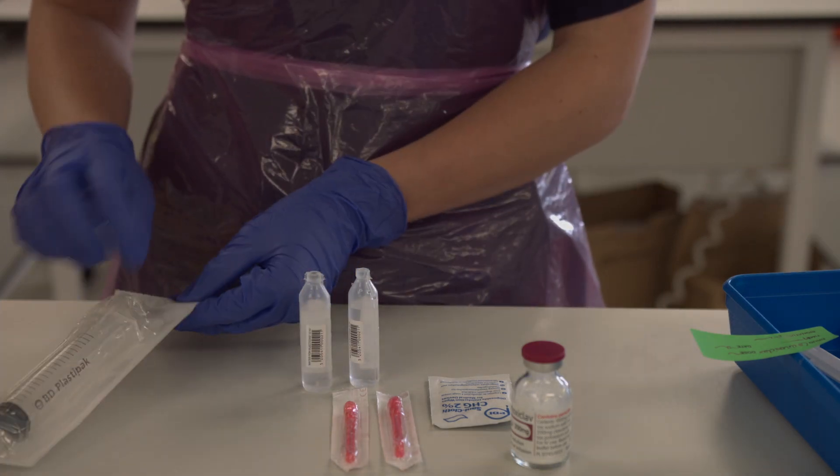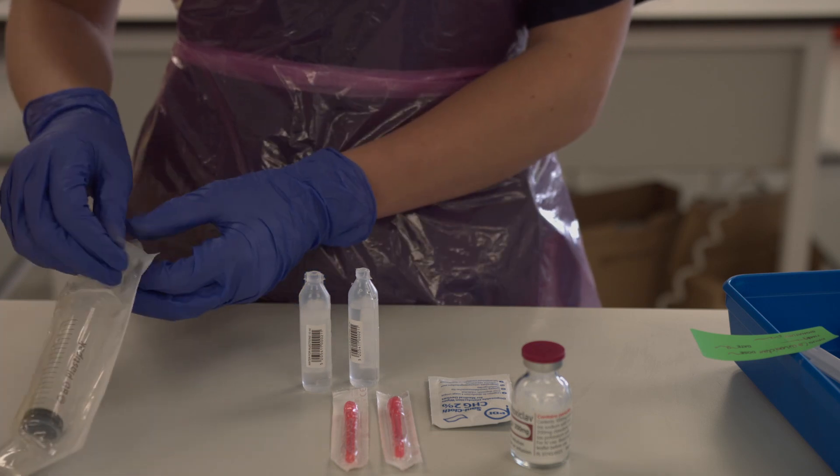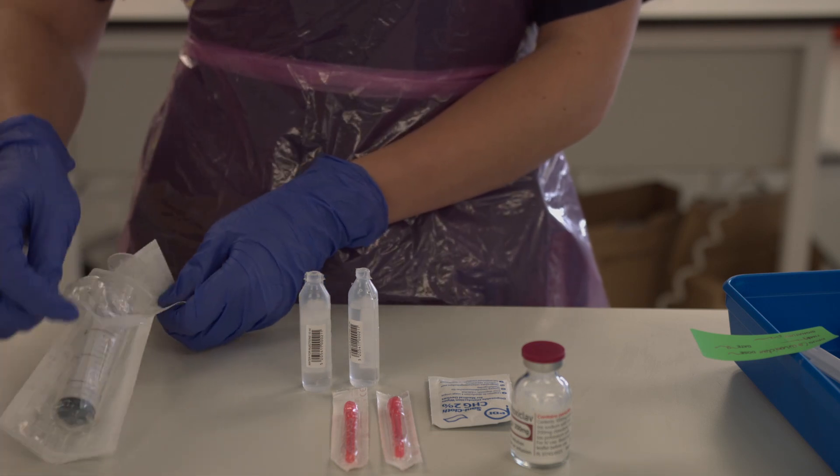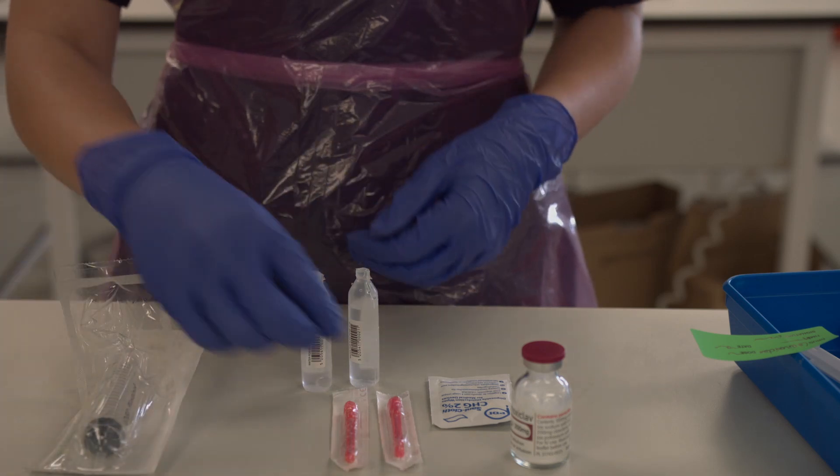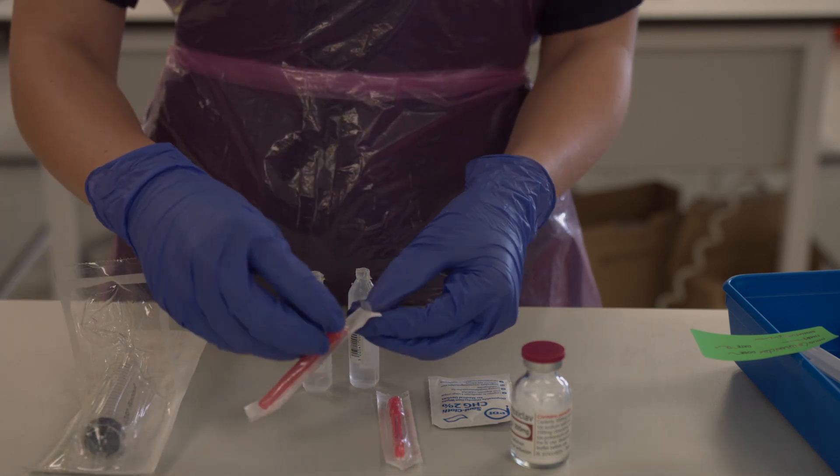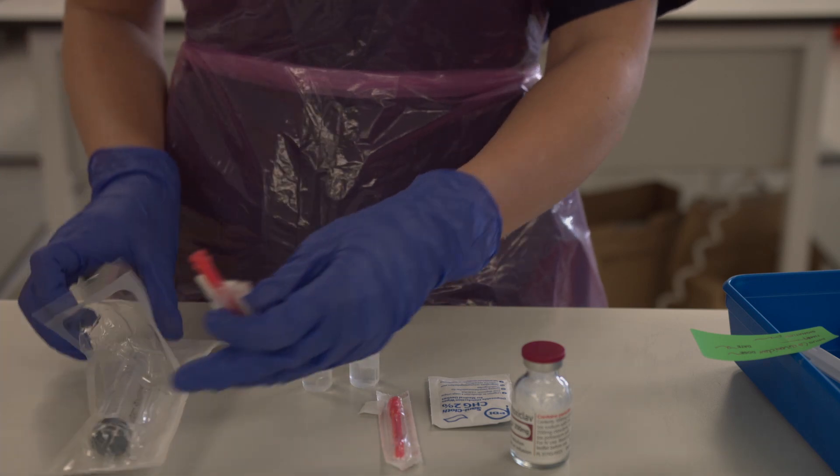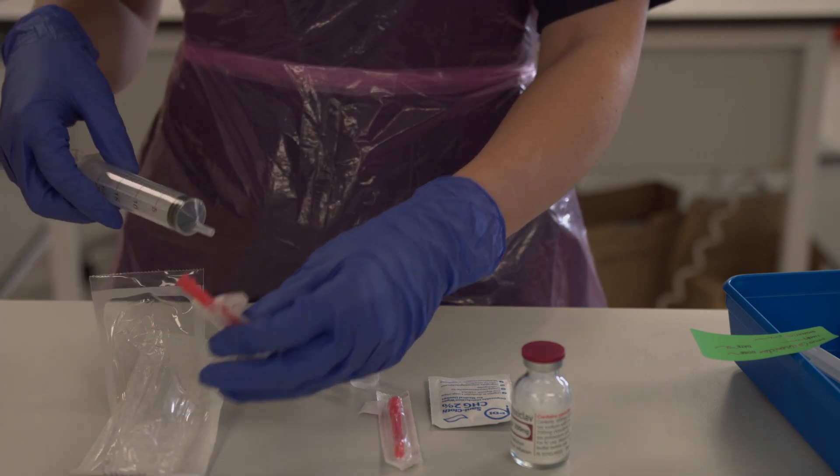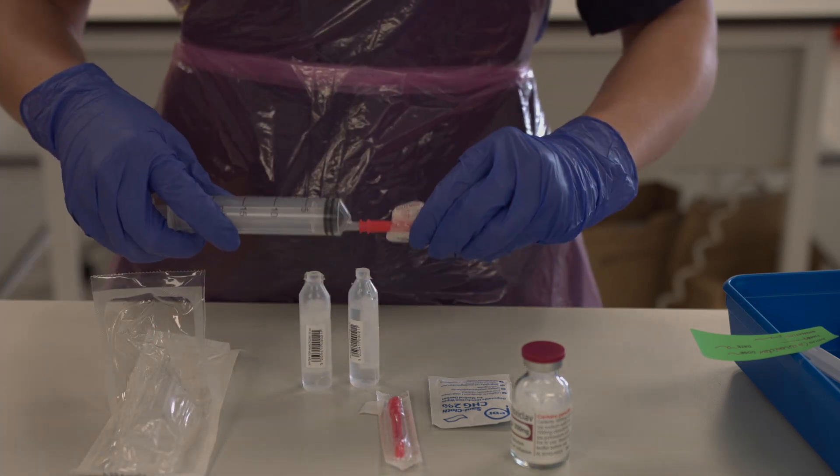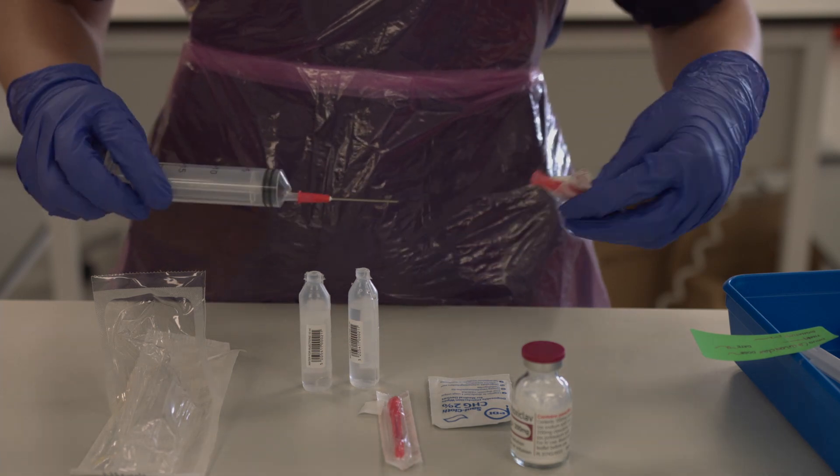Next you need to open up your 20ml syringe but leave it in the packet for now so that it stays sterile. You can then open up your first plump fill needle and attach this to the syringe. You can attach it with a slight twist and then remove the needle cap by pulling straight outwards.